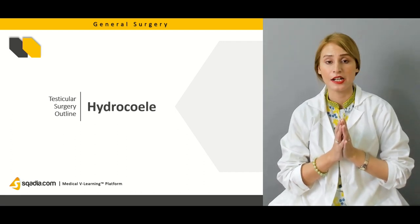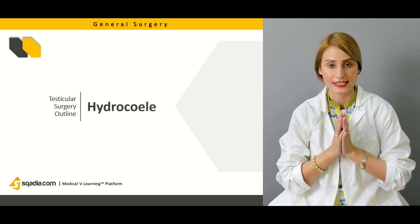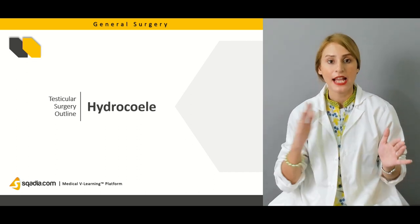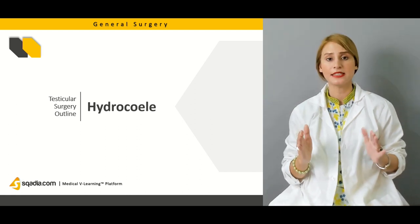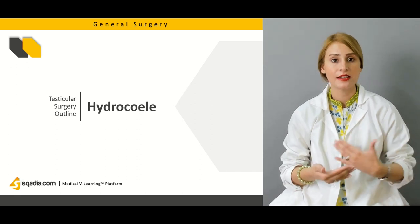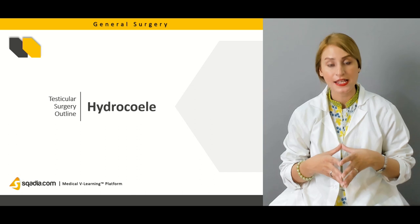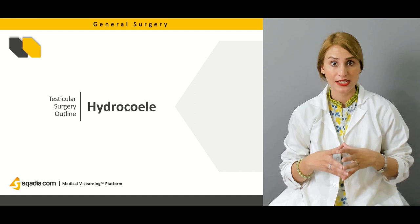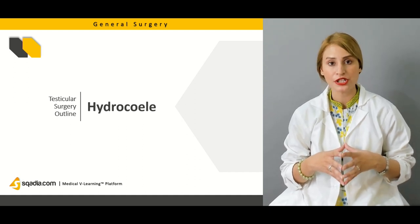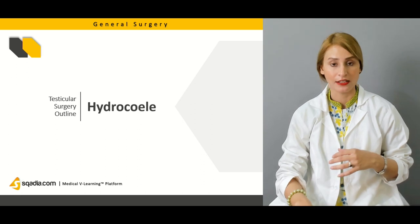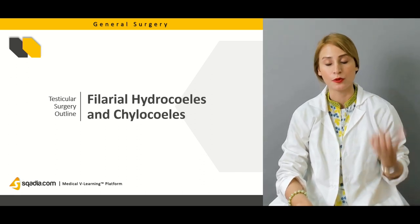We will be talking about the hydrocele, which is a very common presentation. Hydrocele is basically primary or secondary. Primary hydrocele includes congenital hydrocele, patent processus vaginalis, encysted hydrocele of the cord, and hydrocele in adults secondary to torsion, epididymal orchitis, or hernia. We'll discuss how to differentiate varicocele from hydrocele.